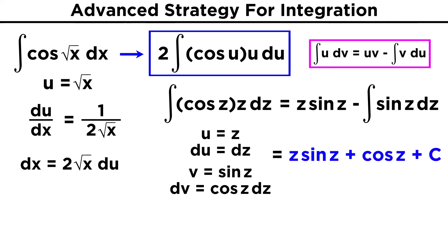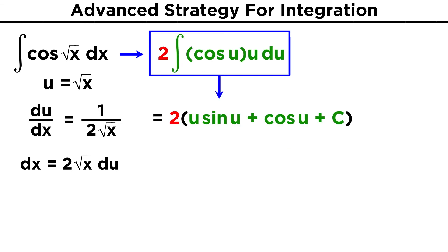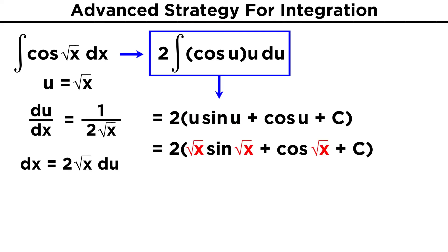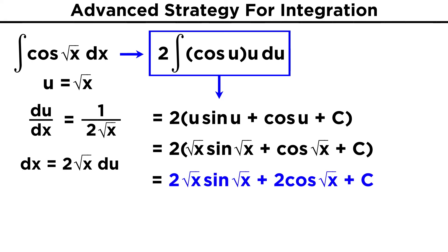Now that we are all done with the integration, we are safe to return the z's back to u's, because we only changed them so that we could use the integration by parts method without confusion. So that's now u sine u plus cosine u plus c. Let's also recall that when we did the original substitution, we arrived at two times this integral, which we then integrated by parts. So we have to bring back the two now, since we are done integrating. Now we just remember that we initially used u to represent root x, so let's bring back root x, and we get two times this quantity. Then we distribute to get two root x sine(root x) plus two cosine(root x) plus c.